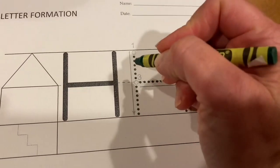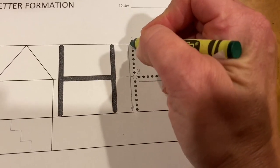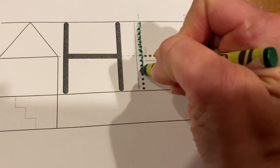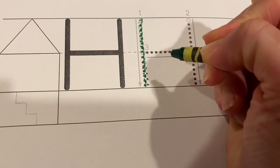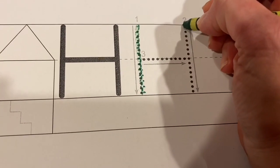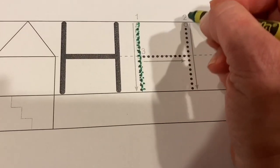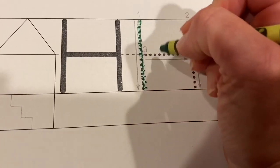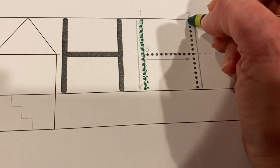Let's practice, ready? Start at the tippy top and come all the way down. Stop at the bottom line, you're gonna come out a little bit, not too skinny, not too fat, come out a little bit.